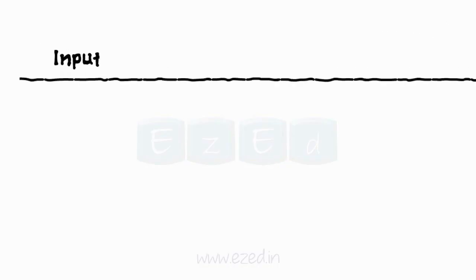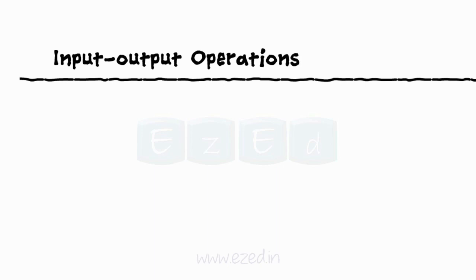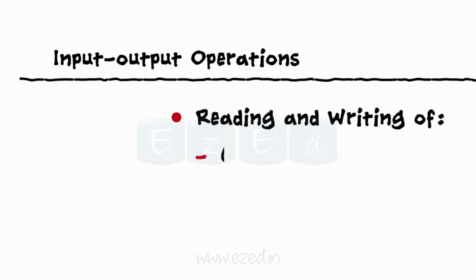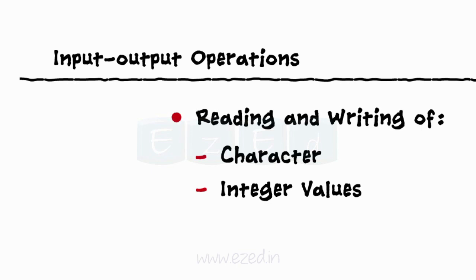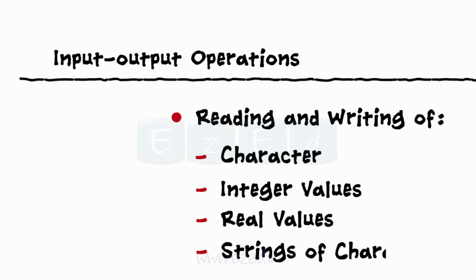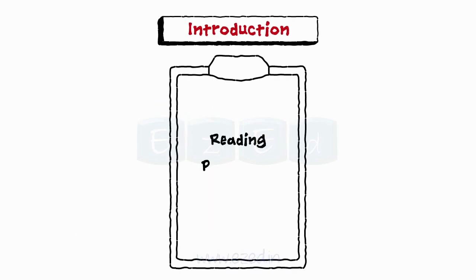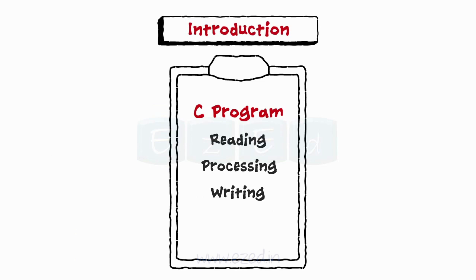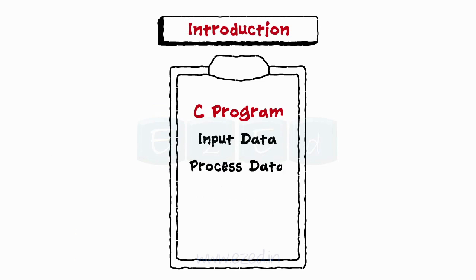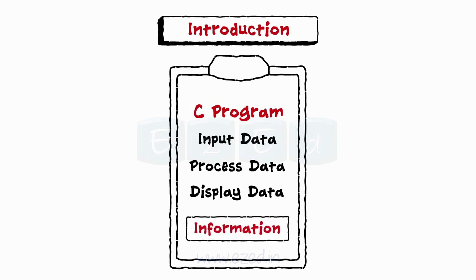In this Easy Ed video lecture, we are going to learn input-output operations, which include reading and writing of a character, integer, real values, and string of characters. We know that reading, processing, and writing are three important functions of a computer program. Most programs take some data as input, process it, and display it in a more readable form, termed as information.